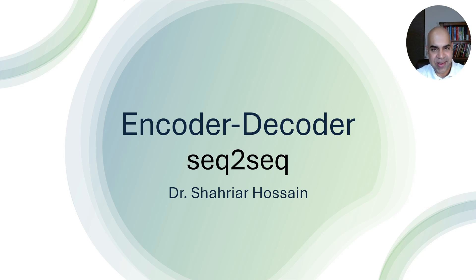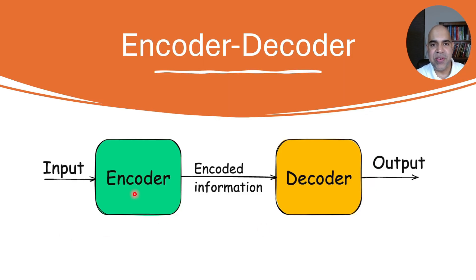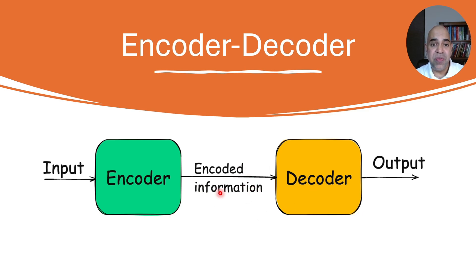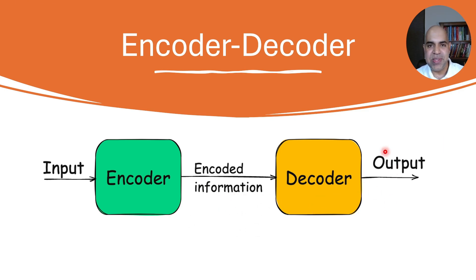The underlying architecture used in Seq2Seq models is often called an encoder-decoder model. Basically, the encoder reads and processes the input sequence to produce a fixed-length context vector, or a sequence of vectors, or some kind of encoded information that summarizes the input. The decoder takes the encoded context vector and generates the output sequence, generally one element at a time.